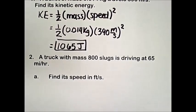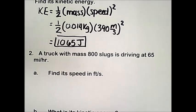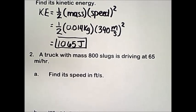Number 2, a truck with mass 800 slugs is driving at 65 miles per hour. Find its speed in feet per second. So part A is just a simple unit conversion.